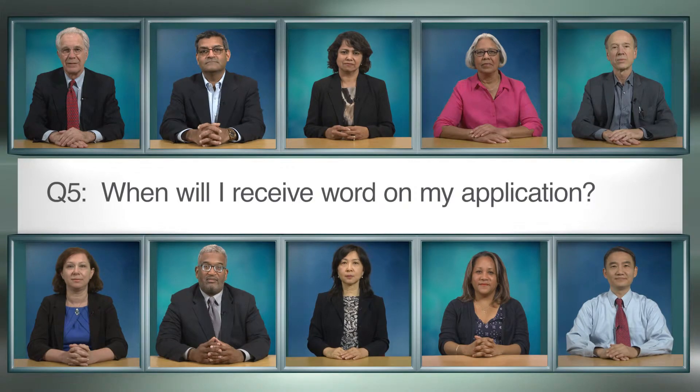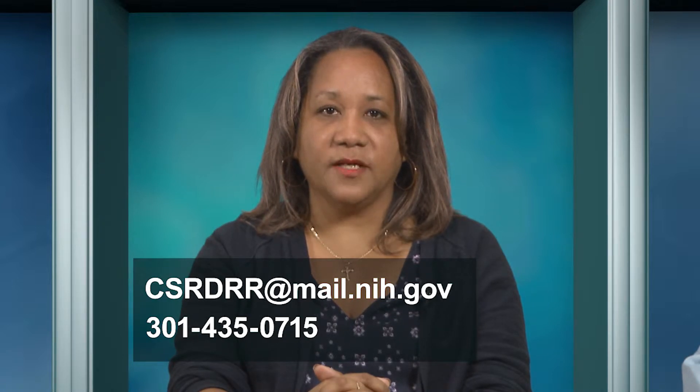Number 5: When will I receive word on my application? Notification that CSR has assigned your application to a scientific review group and institute should appear in your ERA Commons account within two weeks of the submission deadline. If this notification does not appear in this timeframe, please contact CSR's Division of Receipt and Referral at CSRDRR at mail.nih.gov or at 301-435-0715. After the review, your score should appear in your Commons account within three business days and your summary statement within 30 days. Funding decisions are not made until after the relevant institute or center council makes its recommendations.